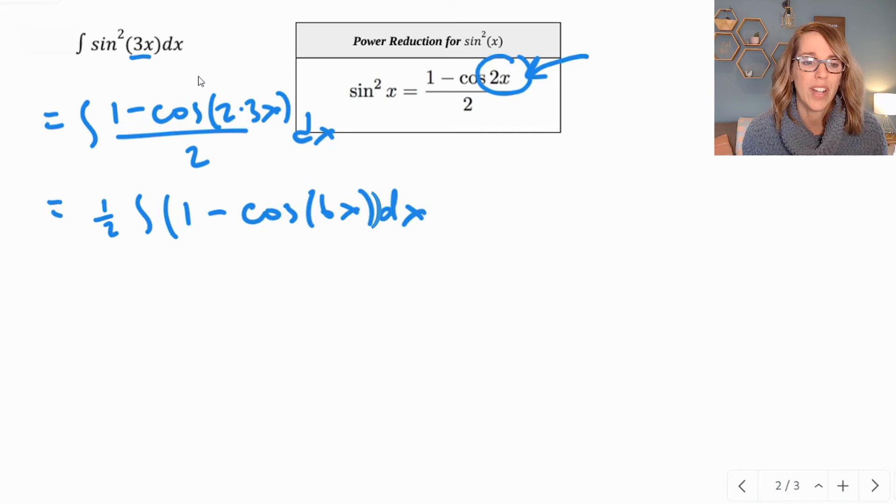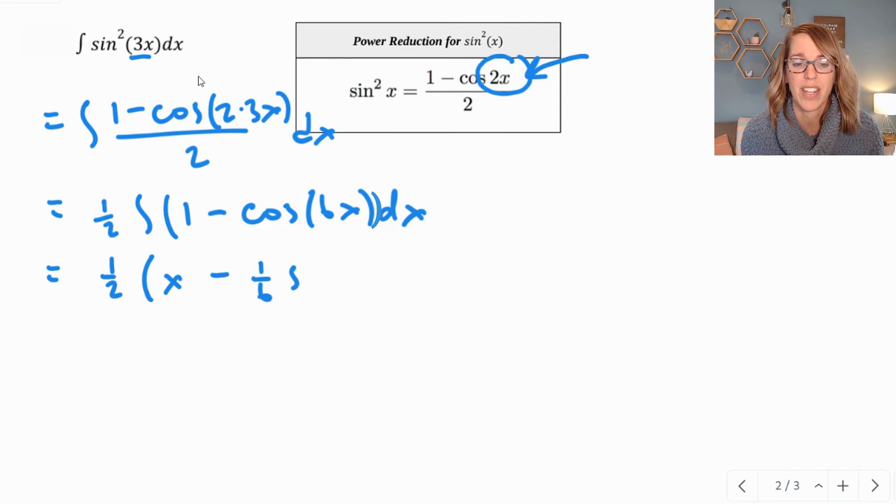As I do the integral, I end up using a reverse chain rule essentially, so I get 1 half. The integral of 1 is x. A 1 sixth comes out, so I end up with minus 1 sixth. The integral of cosine is sine, so that's going to be the sine of 6x plus c.